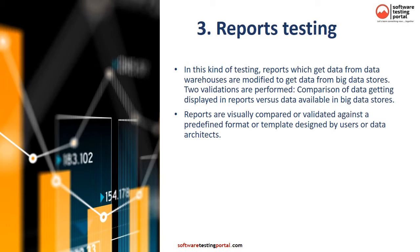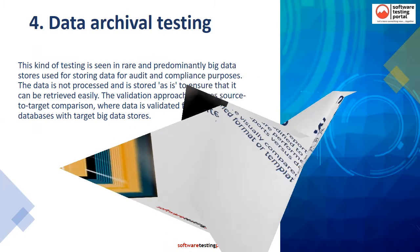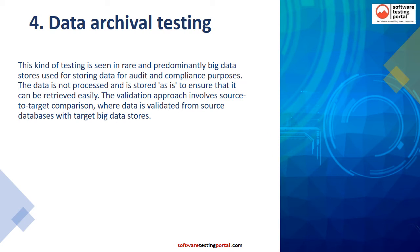Test strategy three is reports testing. In this kind of testing, reports which get data from data warehouses are modified to get data from big data stores. Two validations are performed: comparison of data getting displayed in reports versus data available in big data stores. The fourth testing approach is data archival testing. This kind of testing is seen in rare and predominantly big data stores used for storing data for audit and compliance purposes. The data is not processed and is stored as-is to ensure that it can be retrieved easily, using a source-to-target comparison validation approach.